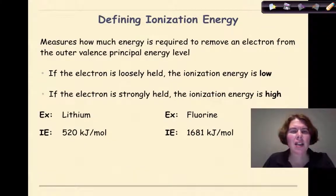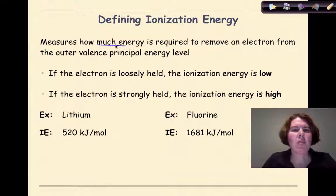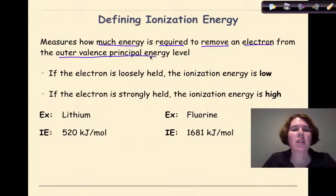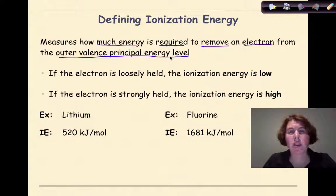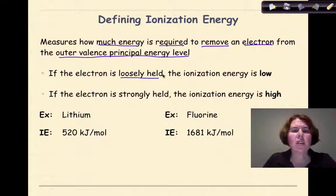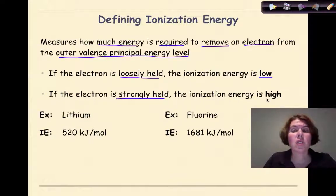So let's start with ionization energy. Ionization energy is going to measure how much energy is required to remove an electron from the outer valence principle energy level. In other words, how much energy does it require to remove one of the valence electrons from the outermost shell. If the electron is loosely held, the ionization energy is going to be low. If the electron is strongly held, the ionization energy is high.